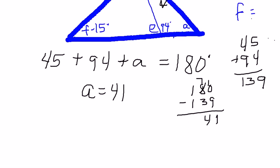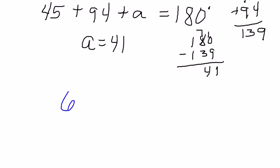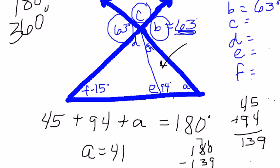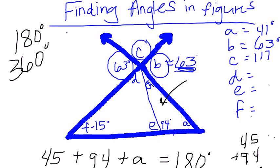So if B is 63 plus C, that has to equal 180. So 180 minus 63 gives me 117. Now I know that C equals 117 degrees.